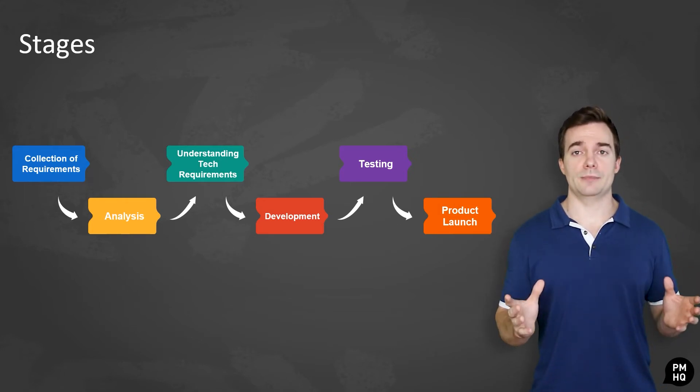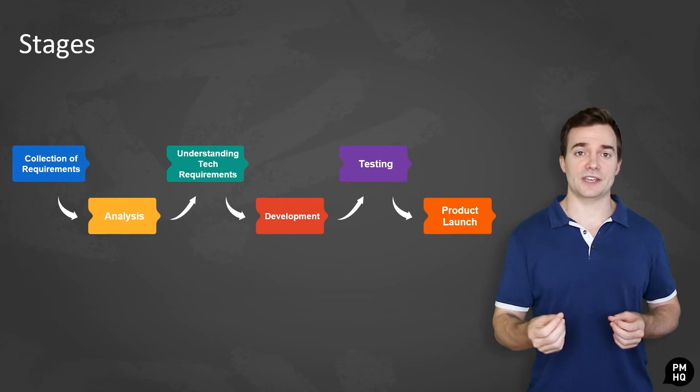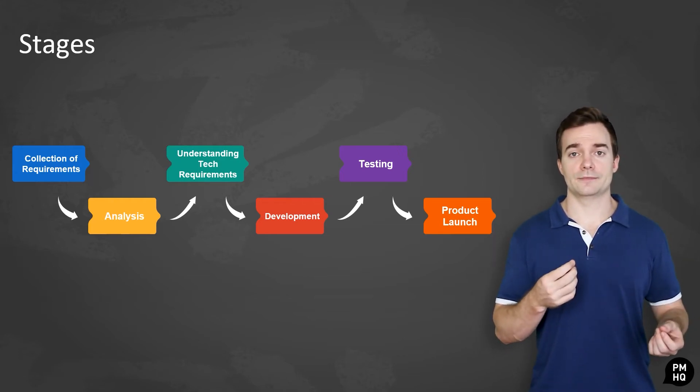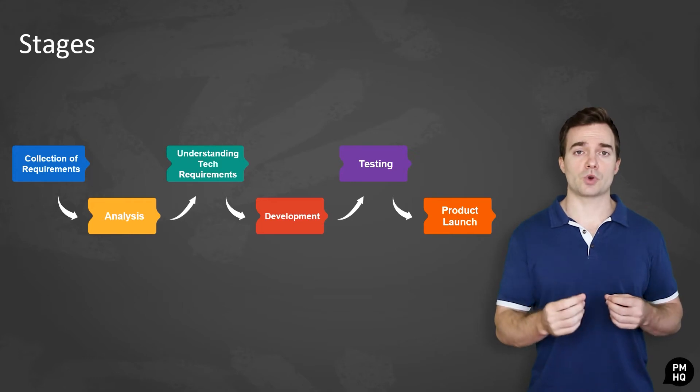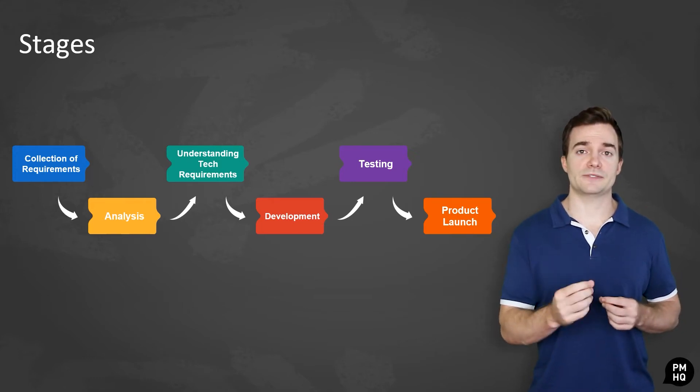The fourth stage is development. This is the implementation phase when the actual source code is finally written, implementing all models, business requirements, and integrations that were specified in the prior stages.